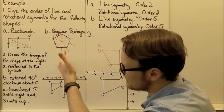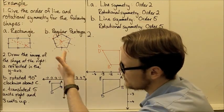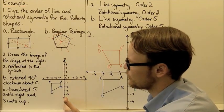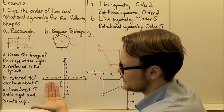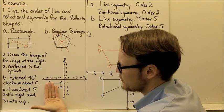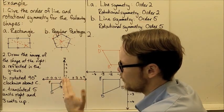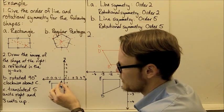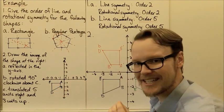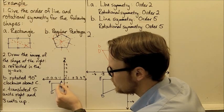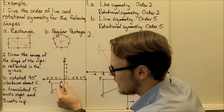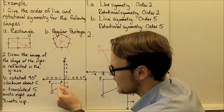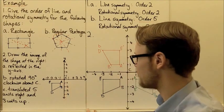For the first transformation, reflected in the y-axis — the y-axis is this axis here — that is going to be our mirror line. As we reflect it, we're reflecting it over onto the other side of the y-axis, so each of the points will have the exact same distance from the image to the object.